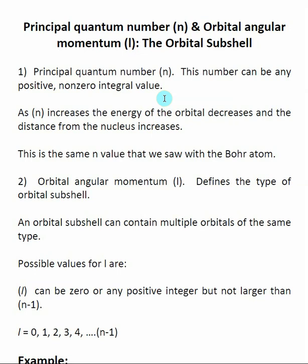Here we're going to focus on two particular quantum numbers: the principal quantum number, which is n, and the orbital angular momentum, which is l. These two quantum numbers by themselves give us the most information about the electron. When we talk about electrons, we typically talk about them in terms of n and l, and this is called the orbital subshell. This tells us most of the information we really need for electrons as we go forward in general chemistry.